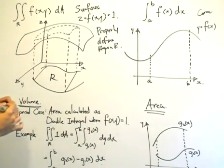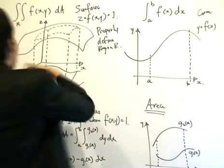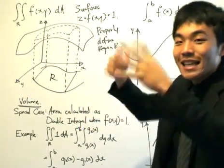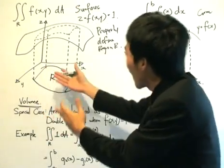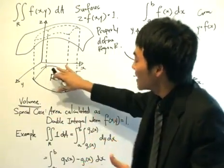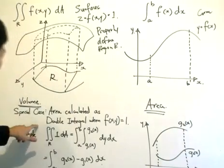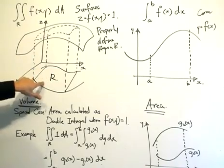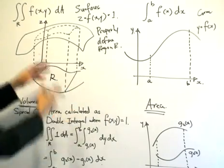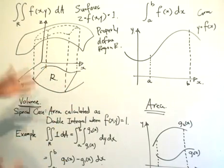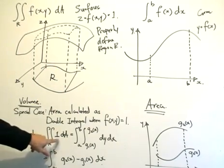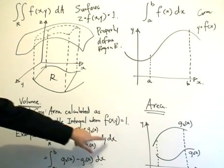When z equals 1, we are compressing the surface all the way down, so what we are integrating is essentially just area R multiplied by a unit height — and we basically get the area of region R. So we can calculate the area of region R using the double integral when f(x, y) = 1. The height is only one unit, so it's just the area multiplied by the unit height, giving us area R.